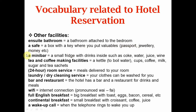A mini bar is a small fridge with drinks inside such as Coke, water, juice, and wine. Tea and coffee making facilities include a kettle to boil water, cups, coffee, milk, and sugar sachets. 24-hour room service means meals are delivered to your room.